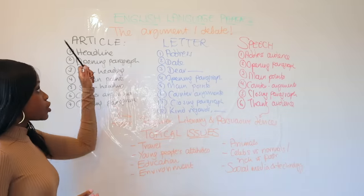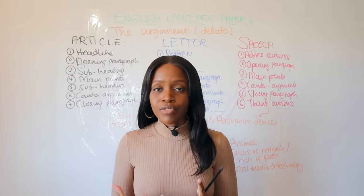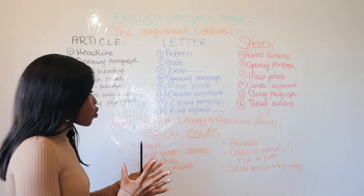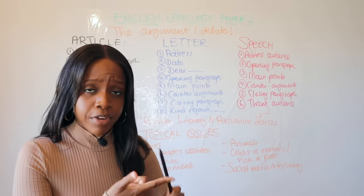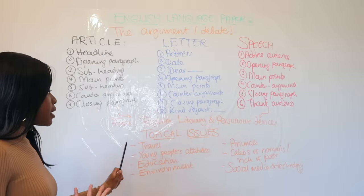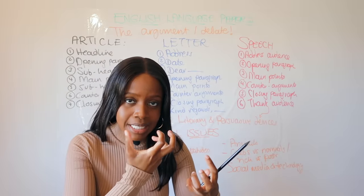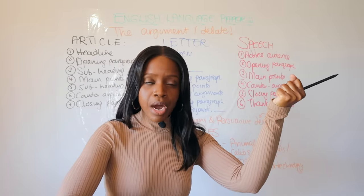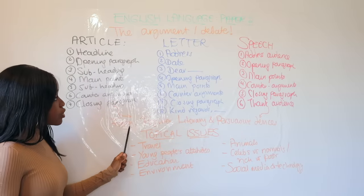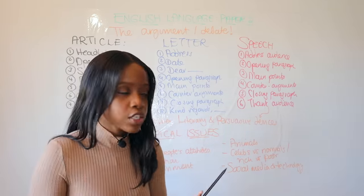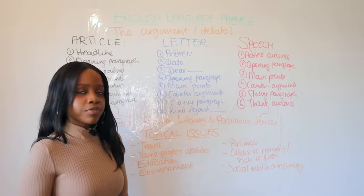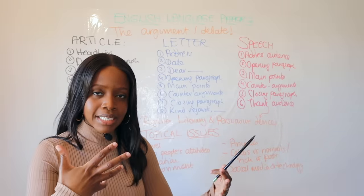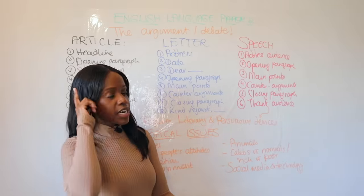When it comes to question five — whether article, letter, or speech — make sure you demonstrate an awareness of form. The main things examiners are looking for are AO5 and AO6. AO5 means: can you clarify and develop your arguments, showing your perspective and why others would be wrong, while demonstrating awareness of form and formal register? Also, when writing, make sure you're using literary devices such as similes, metaphors, rhetorical questions, and short and long sentences to make it entertaining, as well as persuasive devices.